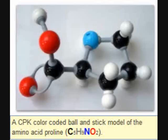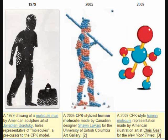The following timeline shows the artistic development of this idea of using the CPK coloring scheme to define humans as molecules, atomically speaking.